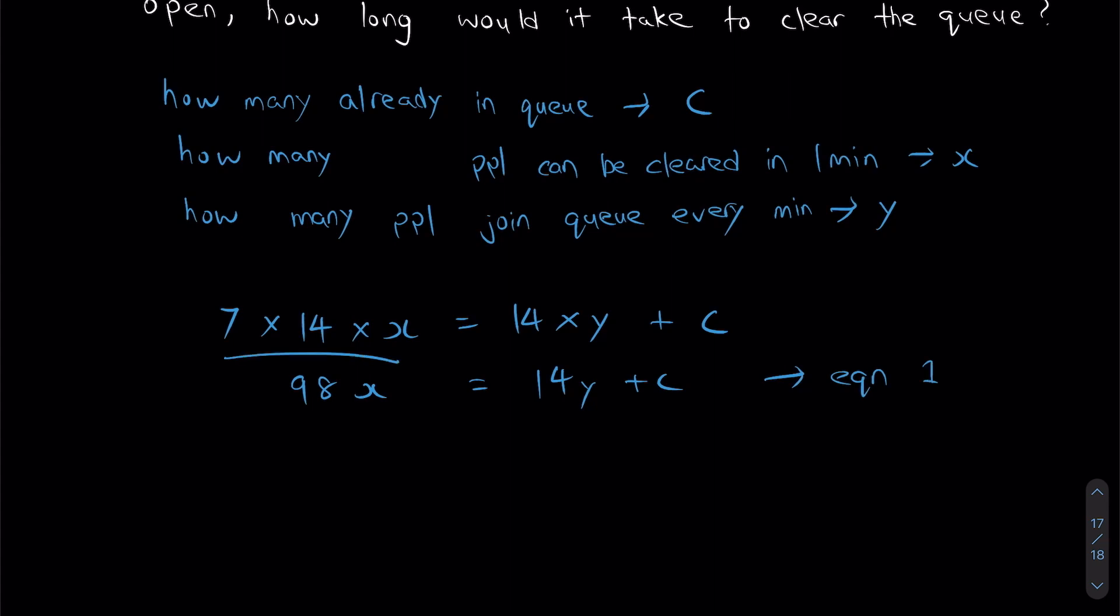So this right here, once again, that's the total number of people. So similarly, I can create one more set of equations. I can now take the one with nine counters open. So nine counters will take 10 minutes to clear everybody.